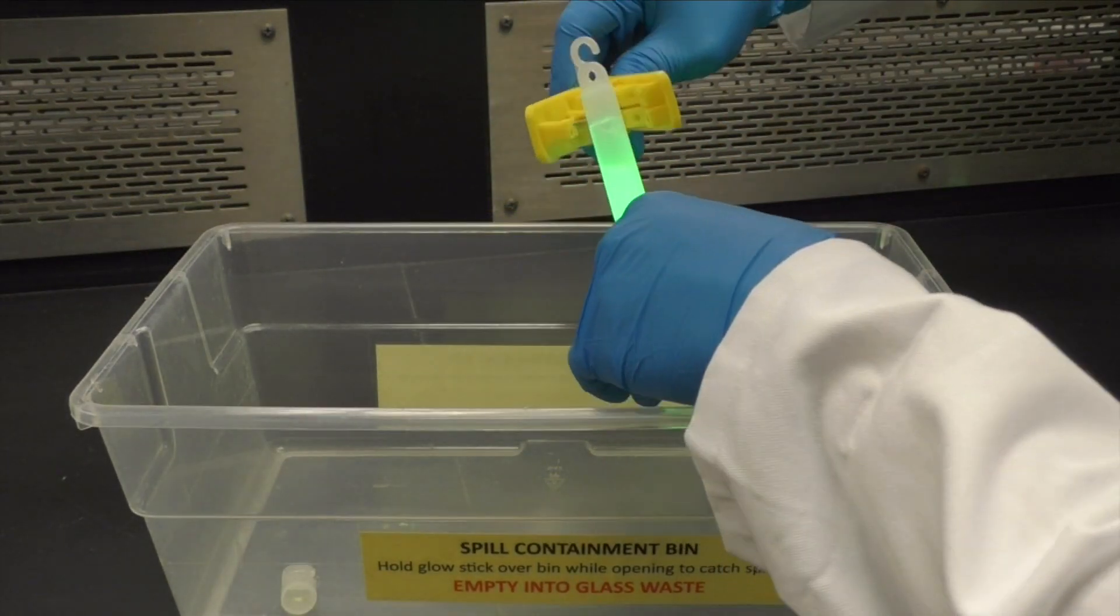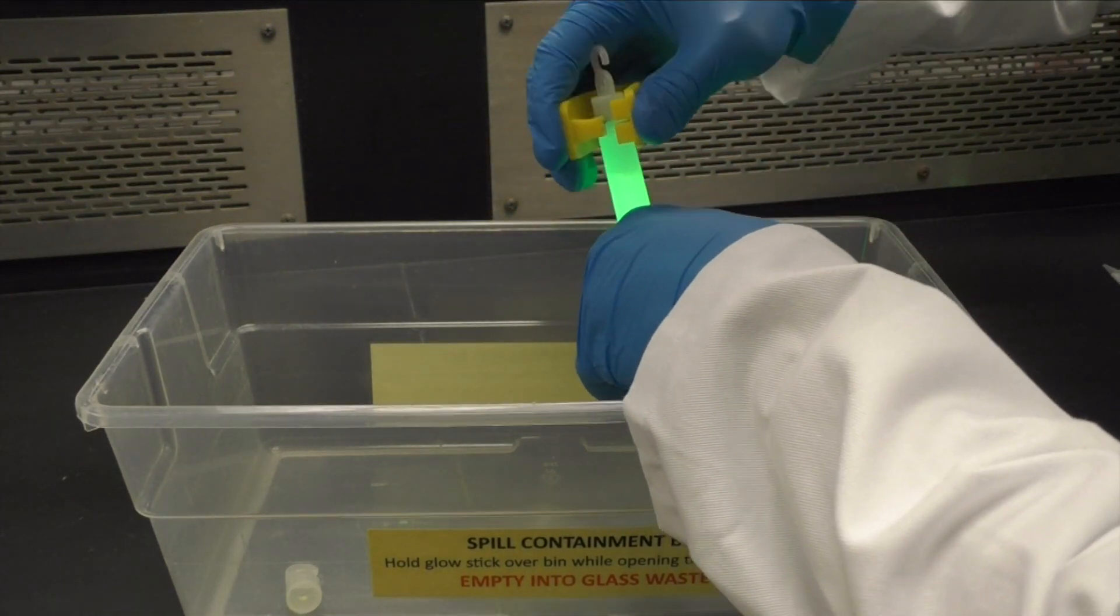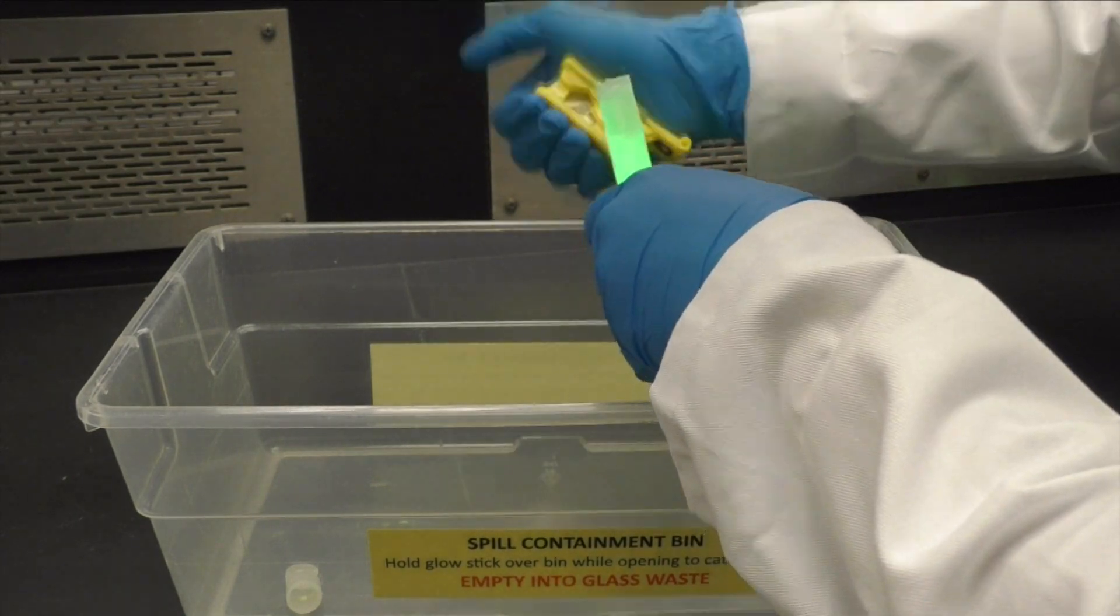Now hold the glow stick upright over the spill bin and apply pressure to the top part of the glow stick using the tubing cutters to snip off the top.